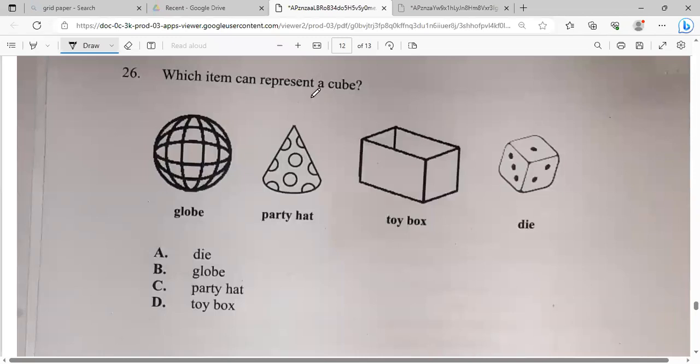Which item can represent a cube? Is it a globe, a party, a toy box, or a die? Now, Jamaica have a tendency to call die dice. But actually, a dice is more than one. More than one of these. So now we have one. This will actually be our answer. It has six sides that are made up of squares. While this now would be a cuboid. So you must be able to differentiate between them.